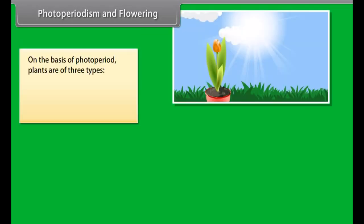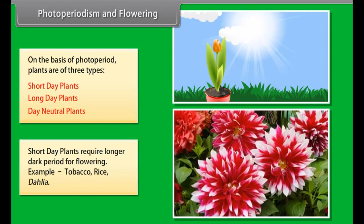On the basis of photoperiod, plants are of three types: short day plants, long day plants, and day neutral plants. Short day plants require longer dark period for flowering. Examples: tobacco, rice, dahlia.